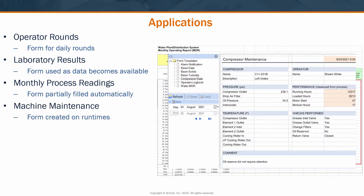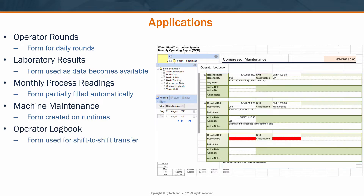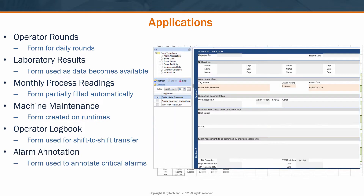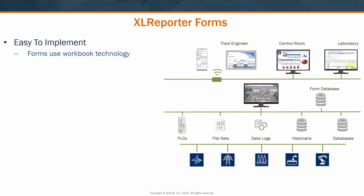In manufacturing, there could be a maintenance form that's triggered when the machine reaches a certain runtime interval. There could be logs transferred by operators from shift to shift, or there could be an incident report that's triggered when an alarm occurs. Regardless of the application, the data has to flow easily from the personnel making the entries to the reports and dashboards that make use of that information.